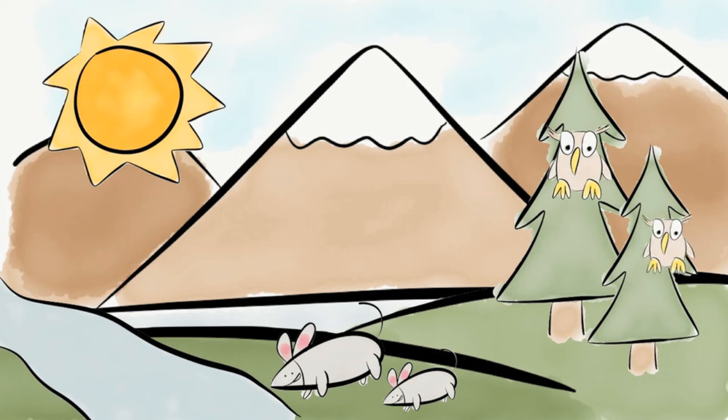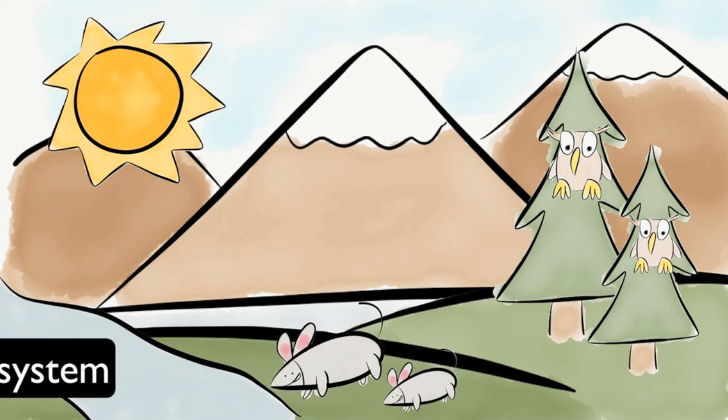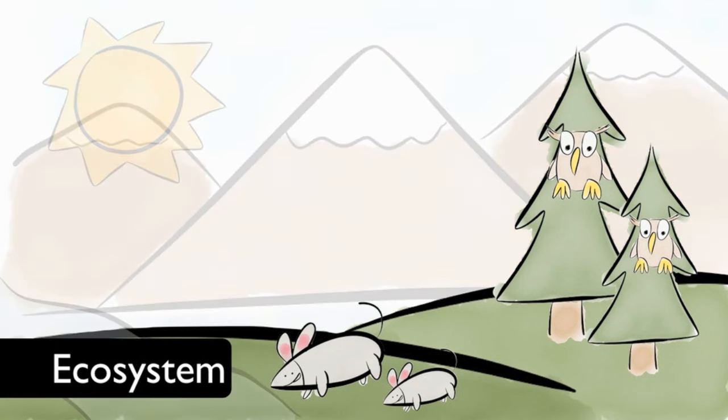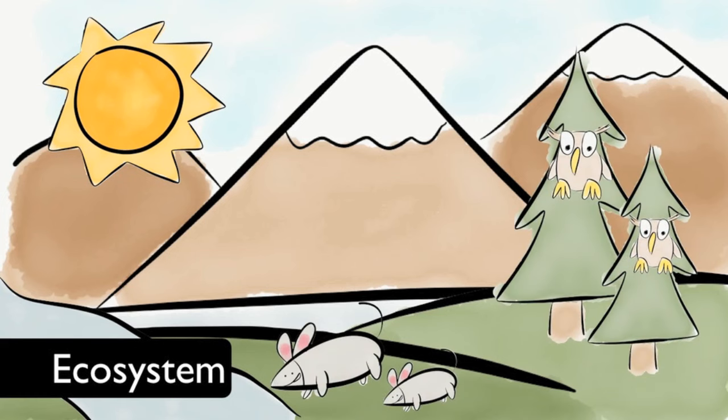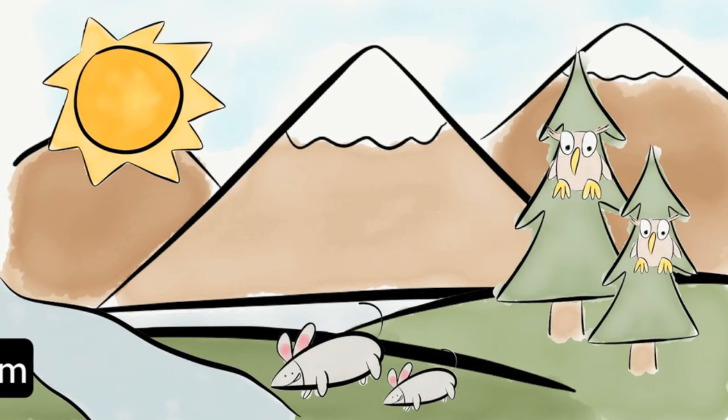An ecosystem is a term that scientists give to all of the living and non-living things in the area. A forest is just one example of an ecosystem.